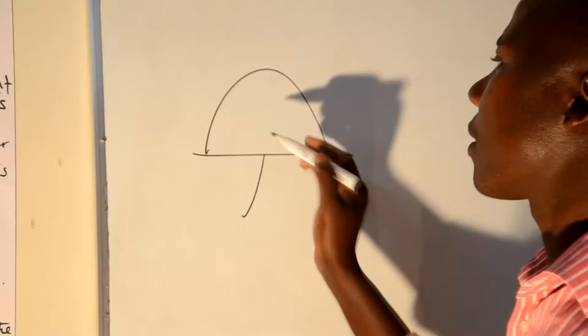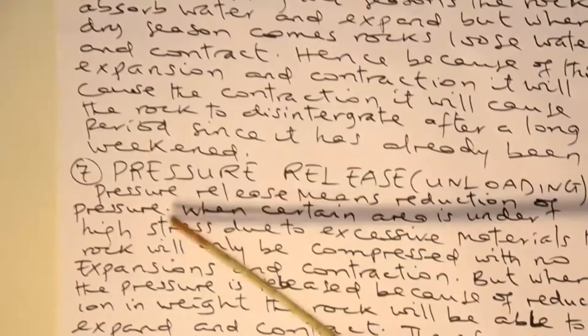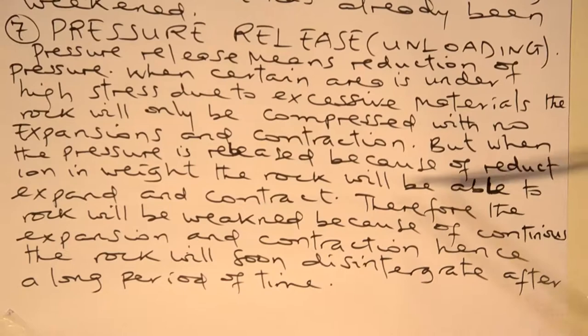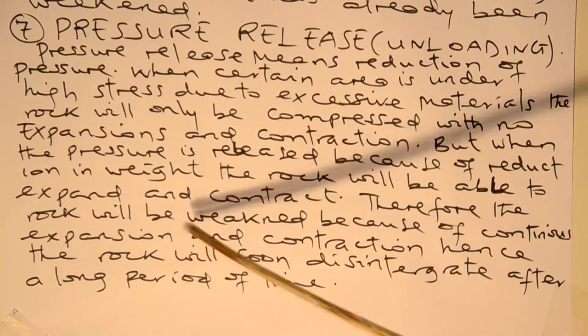Pressure release means reduction of pressure. When a certain area is under high stress due to excessive overlying materials, the rock will be only compressed with no expansion and contraction. But when the pressure is released because of reduction in weight, the rock will be able to expand and contract. Therefore, the rock will be weakened because of continuous expansion and contraction, and the rock will soon disaggregate after a long period of time.